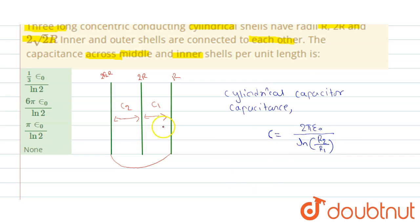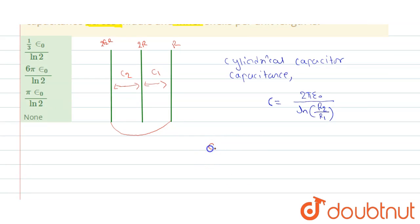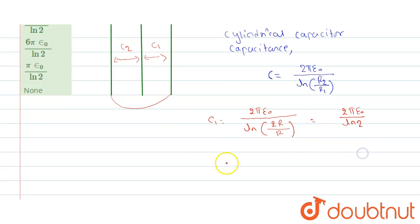Similarly we can calculate C1 will be equals to 2π ε₀ divided by ln of outer radius 2r and inner radius r. So we got here 2π ε₀ divided by ln of 2.